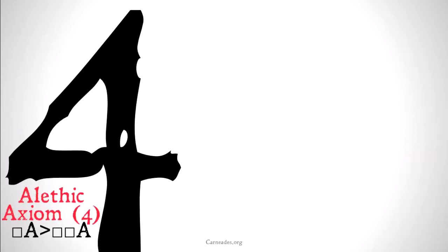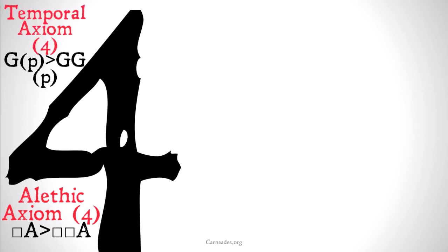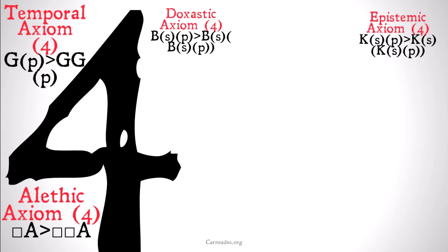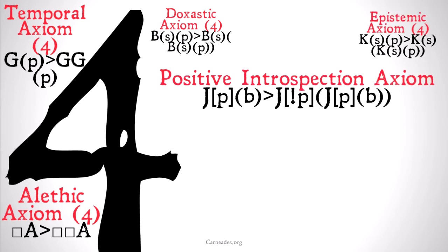As you may remember from previous modal logics, we have an axiom known as axiom 4, which we've seen in alethic modal logic, as well as temporal modal logic, doxastic, and epistemic modal logic. However, in justification modal logic, it's going to look something like this.